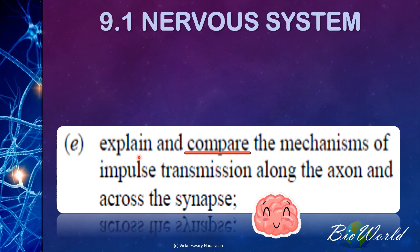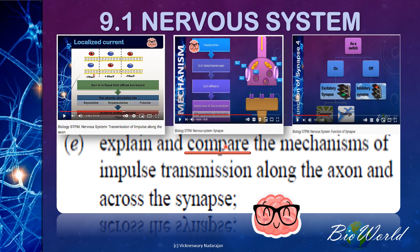To be able to complete the comparison, it's best that you have gone through three of my earlier videos: the video on transmission of impulse along the axon, the video on synapse where I explain the transmission of impulse across the synapse, as well as the video on the function of synapse, so that you are familiar with some of the terms we use when making comparisons. When we talk about comparison, it means both similarities as well as differences. So let's start off with the similarities.